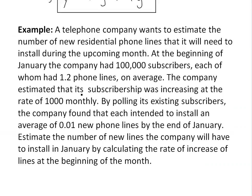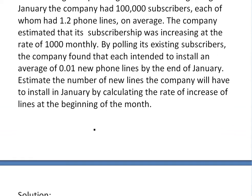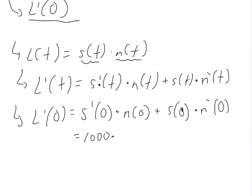And this is the rate that the number of phone lines is increasing. So if you go back up to it, each had 1.2 phone lines. That is N(0). So this is the number of lines per subscriber, that's 1.2 at the start.